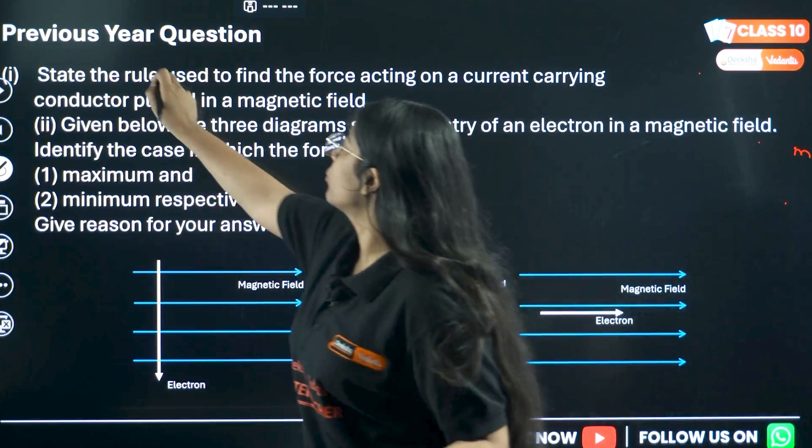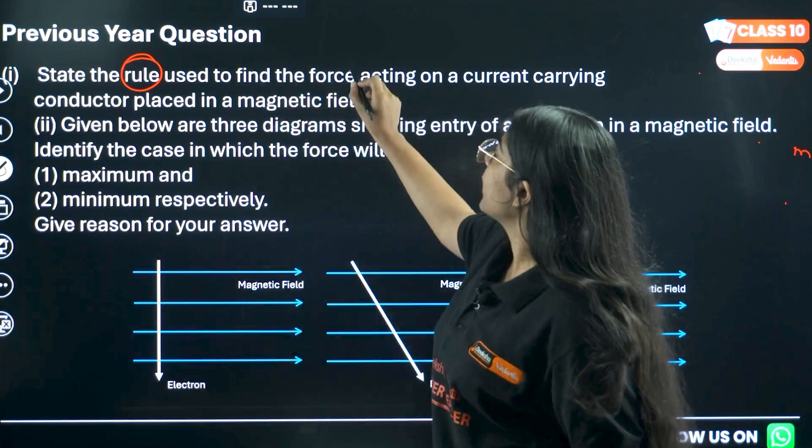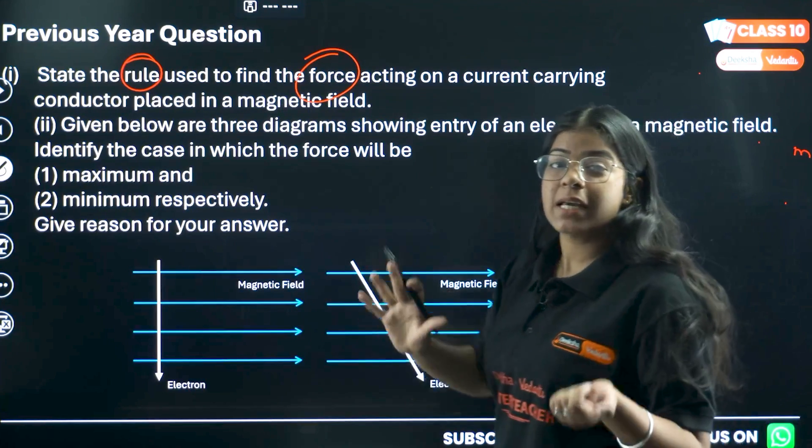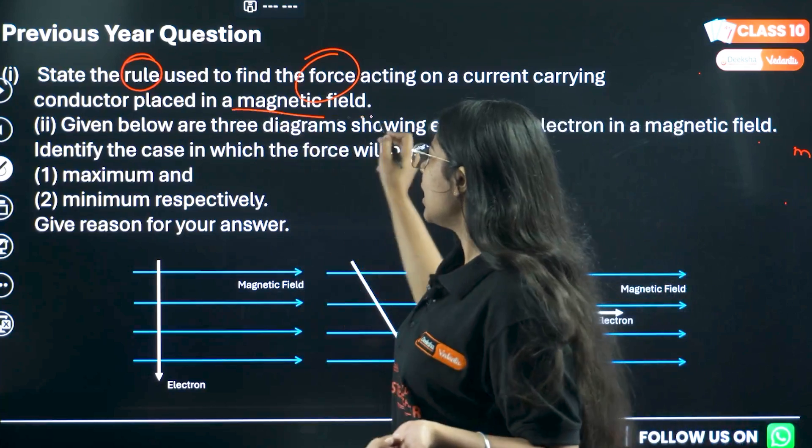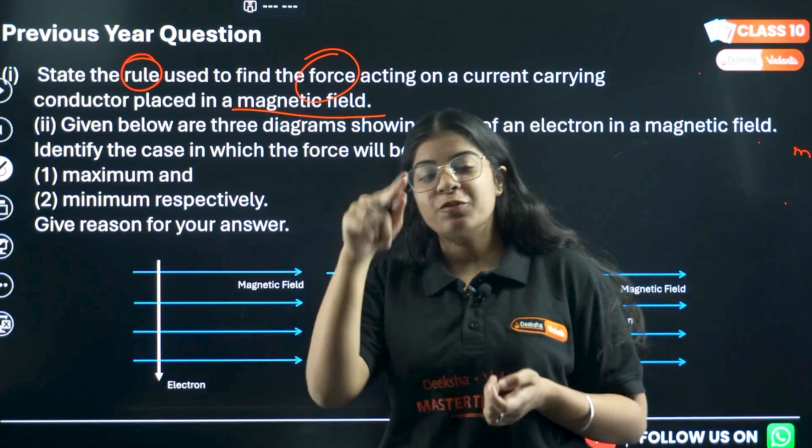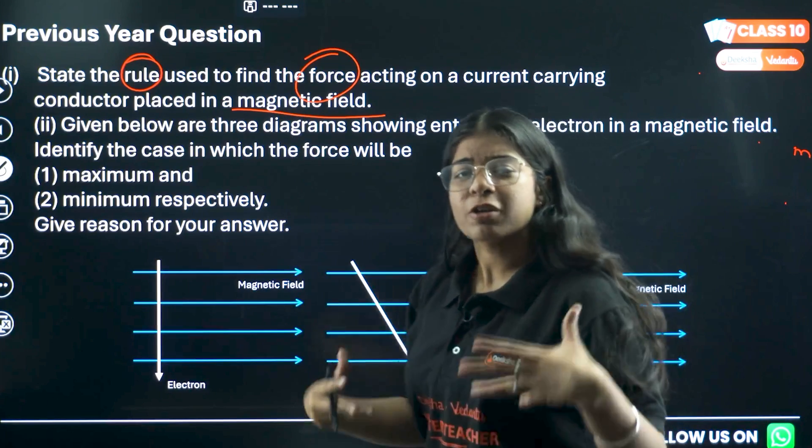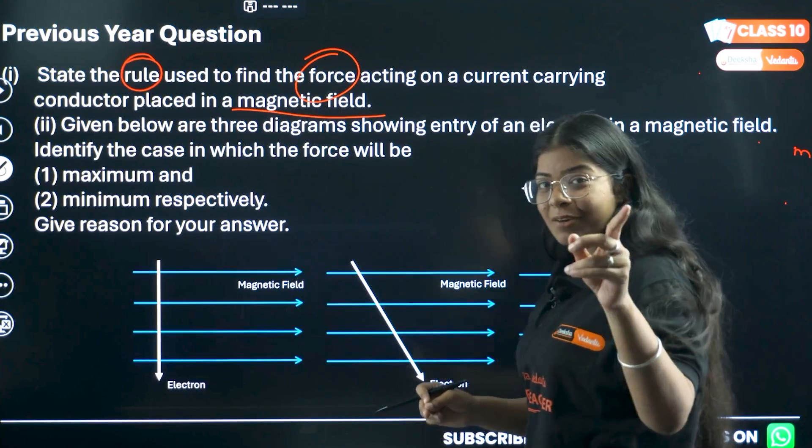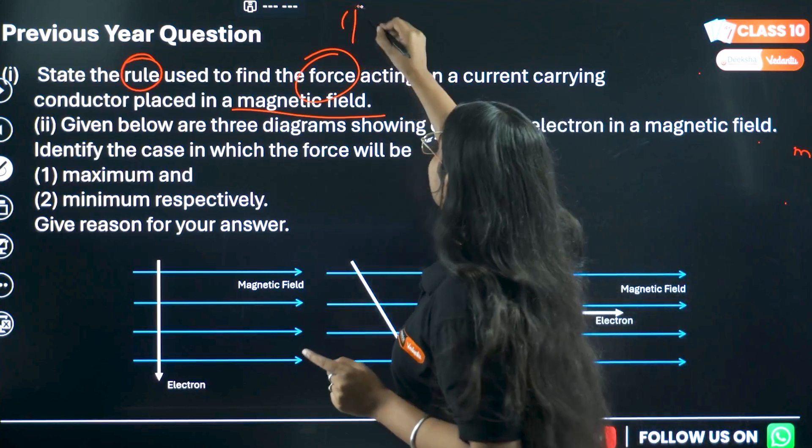State the rule. What do I have to do? State the rule used to find the force acting on a current carrying conductor placed in a magnetic field. Does all these things ring well? Yes ma'am, we need to find force, we need to find the direction of force or the force using a hand rule and that is given by Fleming's left hand rule.